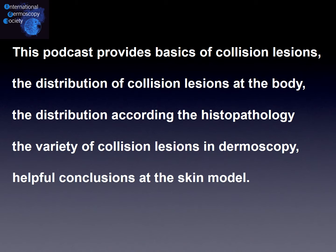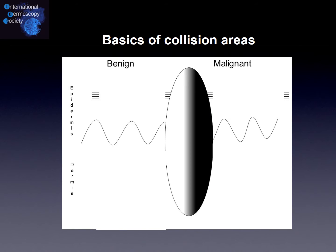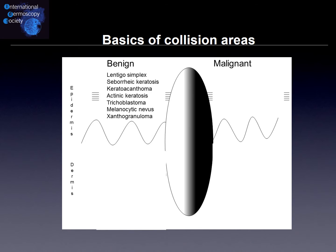Let us start at the beginning with a basis. I will show you the skin model because we need to understand where we can find benign and malignant lesions of the epidermis and dermis origin. For the epidermis and benign sections, we can have for example lentigo simplex or keratoacanthoma, actinic keratosis, benign lesions — not the pre-cancer lesions — and most of all melanocytic nevi and seborrheic keratosis.